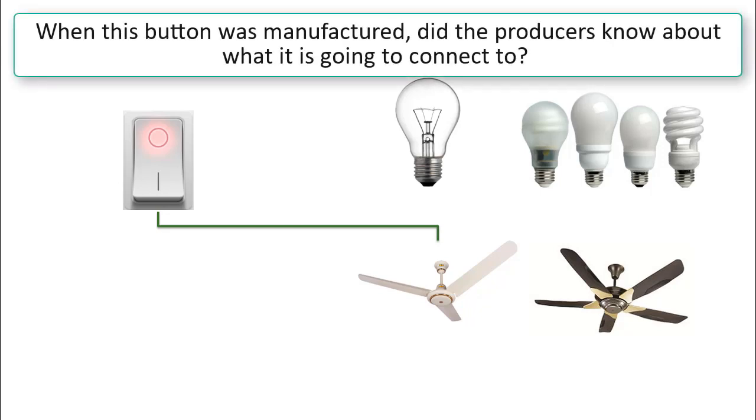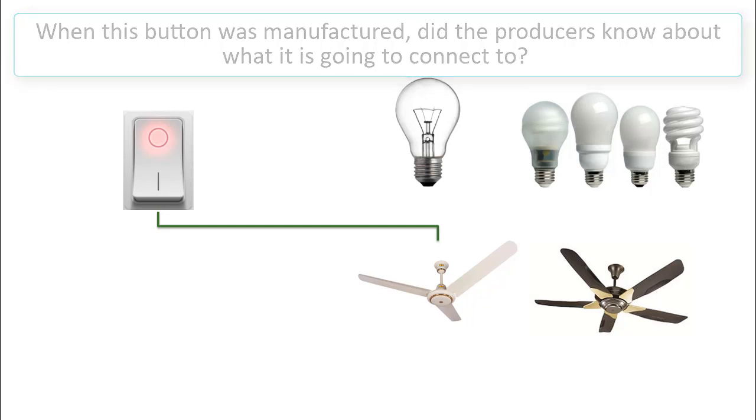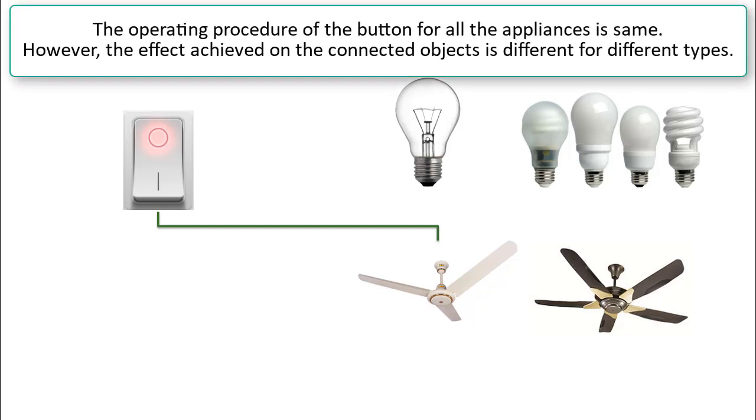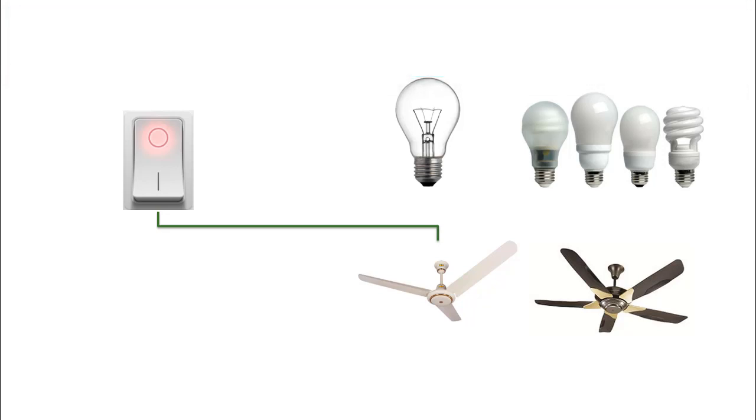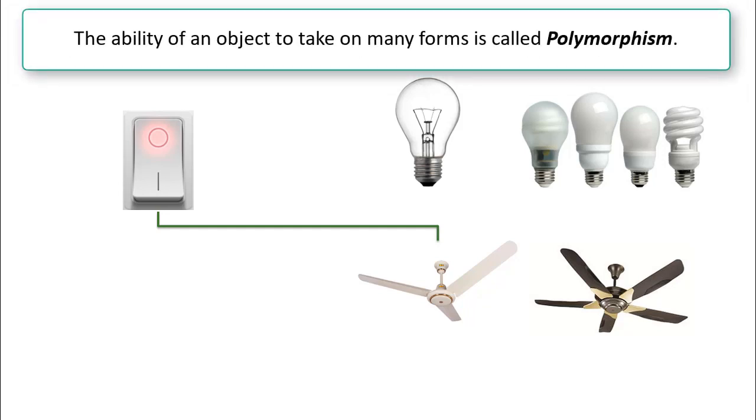Let me explain what I mean by that. Tell me, when this button was manufactured, did the producers know about what it is going to connect to? Obviously, they need not. However, even the operating procedure for the button for all the appliance is same. However, the effect achieved on the connected objects is different for different types.